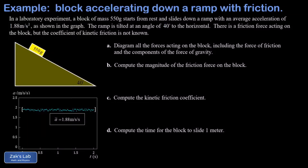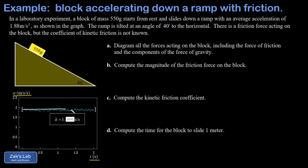In this problem we're looking at the results of an experiment in the lab. Going down to the data window, I have a bunch of points listed for the acceleration that was measured as a function of time, and I've used software to average the acceleration. It's pretty much a constant value but there's a little bit of noise in it, and the average value is 1.88 meters per second squared — the acceleration of the block down this ramp.